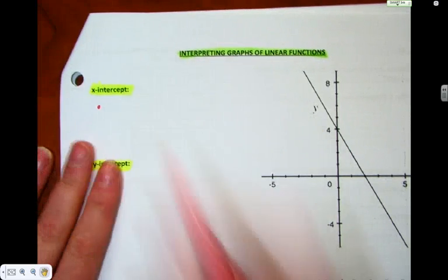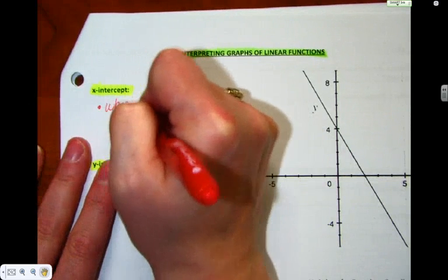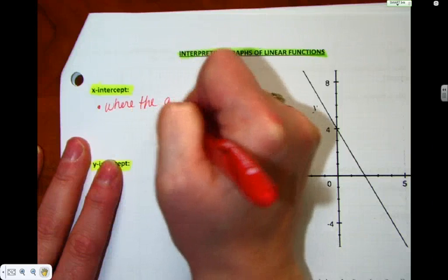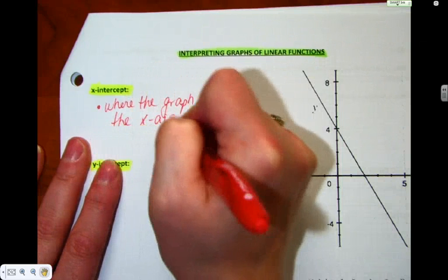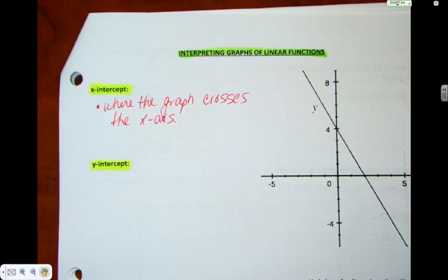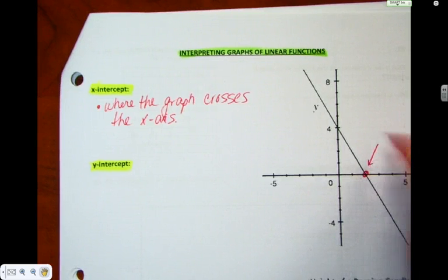The x-intercept, where the graph crosses the x-axis. What's another word for crosses? Intercepts. That's why it's called the x-intercept. It's where it physically intercepts the x-axis. On this graph, right here, would be the x-intercept.